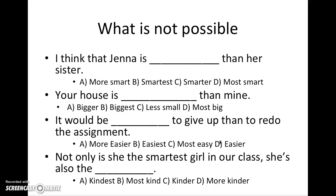Write down what you think the answer is — a, b, c, or d. Number two: 'Your house is blank than mine.' Is it bigger, biggest, less small, or most big? Just write something down in your notes. Number three: 'It would be blank to give up than to redo the assignment.' Is it more easier, easiest, most easy, or easier? And your last one: 'Not only is she the smartest girl in our class, she's also the blank.' Is it the kindest, the most kind, the kinder, or the more kinder?